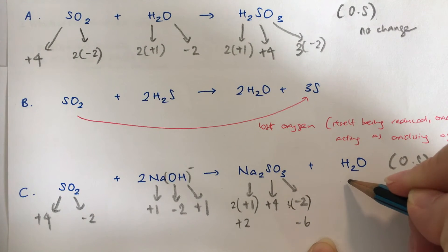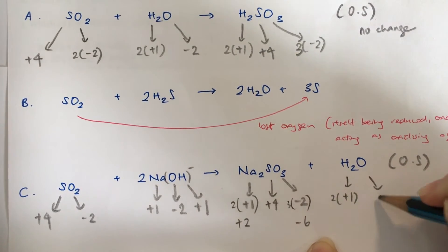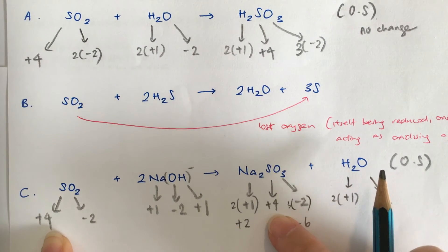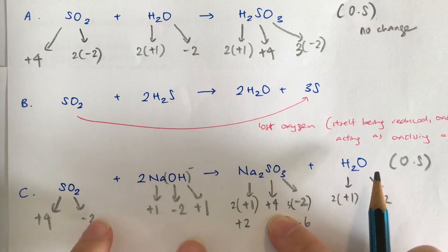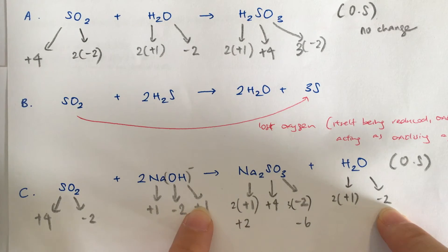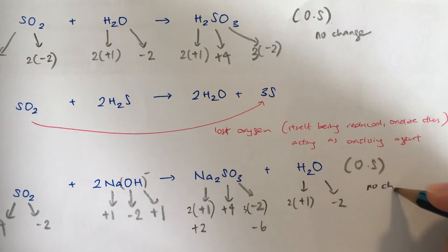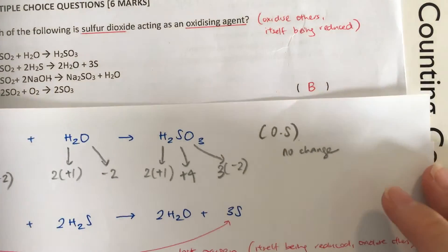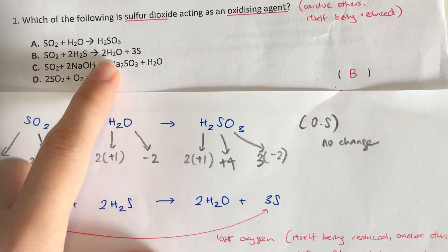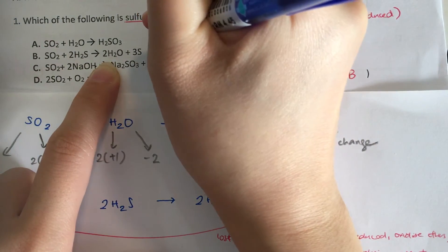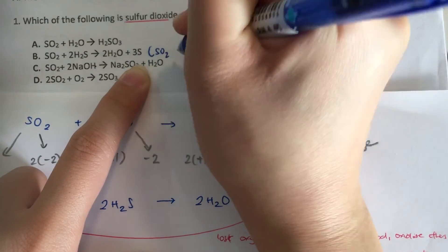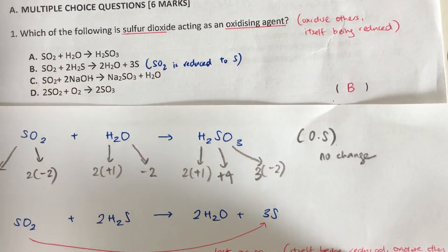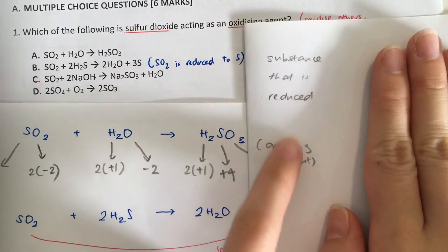Since hydrogen and oxygen also show no change throughout, there is no change in oxidation state for option C — it is not a redox reaction. So our answer for question one is B, because sulfur dioxide is reduced to sulfur. Once it is being reduced, it is acting as an oxidizing agent.